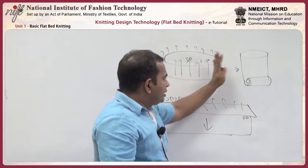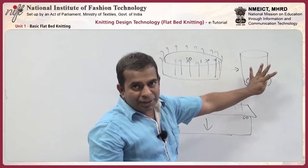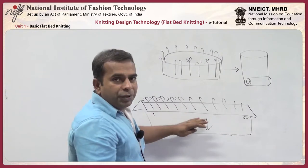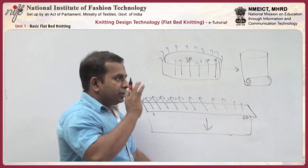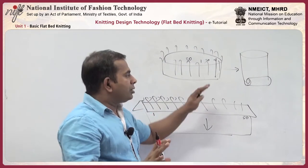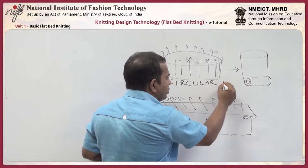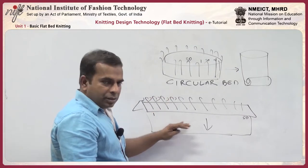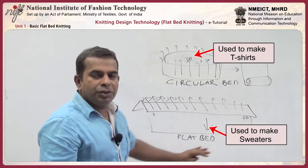From the circular machine, you usually produce fine knits or t-shirt kind of materials. In the flat bed knitting machine, we produce coarser knits or sweater kind of materials. So if you identify t-shirts and sweaters as the two major areas of knitted products: t-shirts come out of circular bed knitting machines, and sweaters come out of flat bed knitting machines.